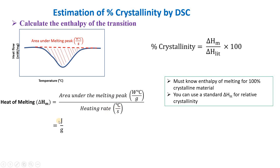The unit of enthalpy will be Joules per gram. The formula for percentage crystallinity is the enthalpy of melting divided by the enthalpy of a pure 100% crystalline sample, which gives the percentage crystallinity. This reference value is obtained from a standard table when doing DSC analysis.